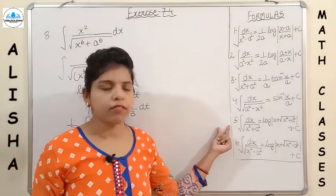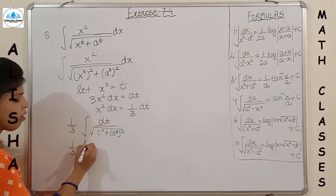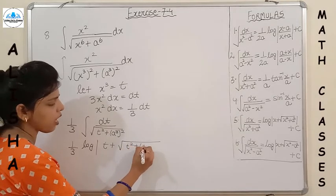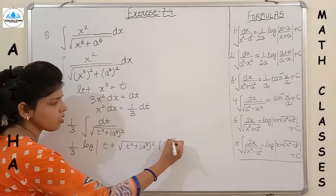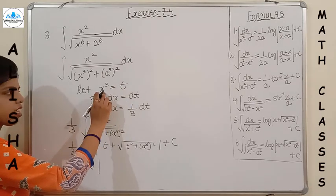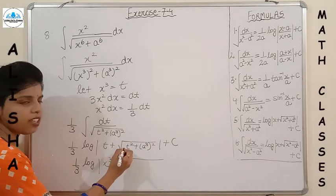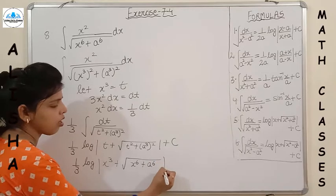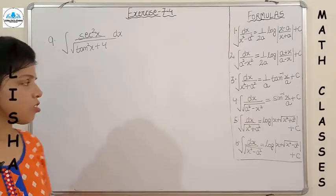This resembles the fifth formula: integration of dx/√(x² + a²) = log|x + √(x² + a²)|. Replacing x with t and a with a³, the answer is (1/3) log|t + √(t² + (a³)²)| + C. Putting back t = x³: (1/3) log|x³ + √(x⁶ + a⁶)| + C. Don't forget to replace t at the end.